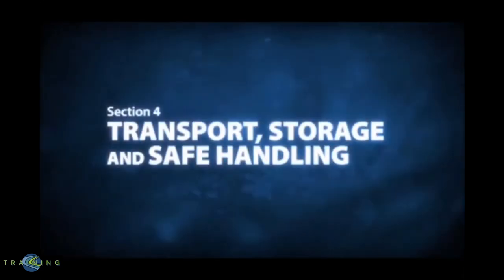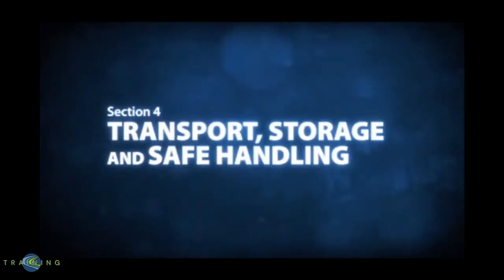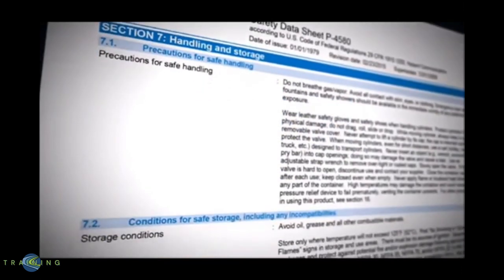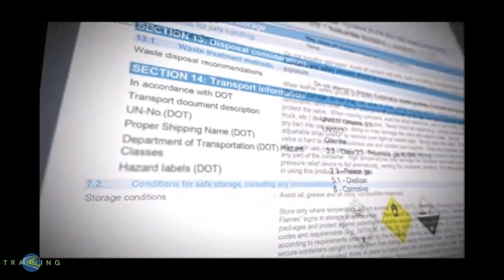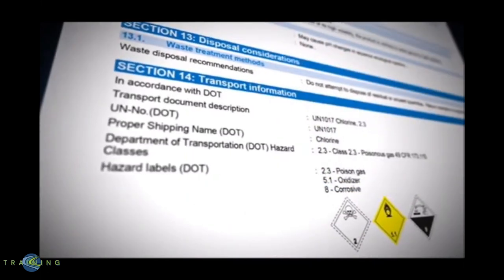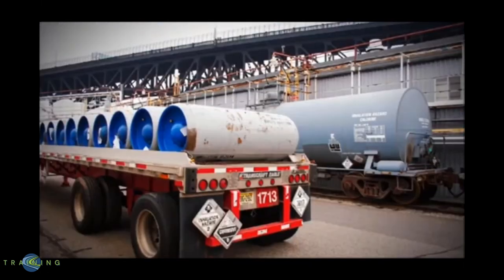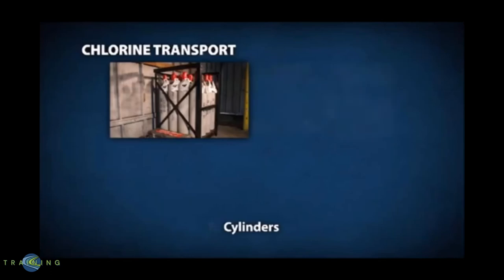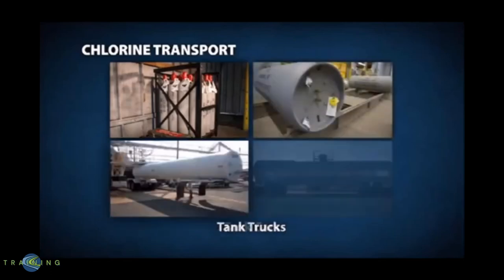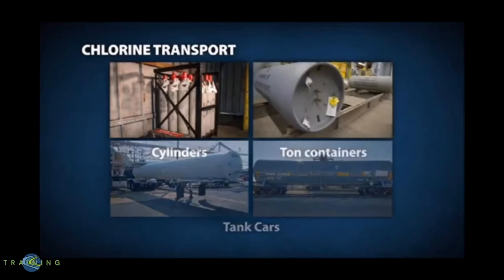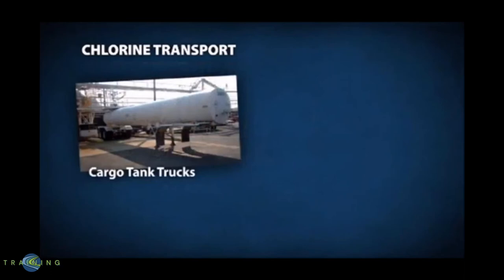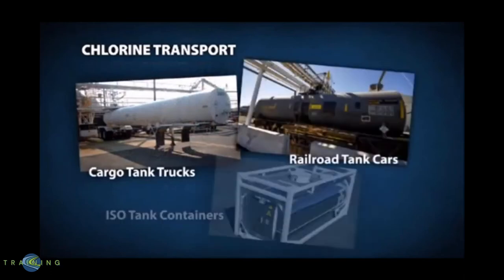Because chlorine is very reactive, transportation, storage, and handling must be conducted in a way that minimizes risk. Refer to Sections 7 and 14 of your supplier's safety data sheet for more information. During transport, all chlorine is shipped as a liquefied gas under pressure. Chlorine may be shipped in cylinders, ton containers, cargo tanks, and tank cars. This program focuses on cylinders and ton containers. Additional training must be provided if your work involves cargo tanks, tank cars, or ISO tank containers.